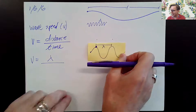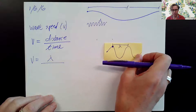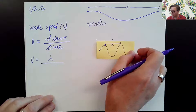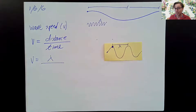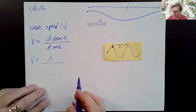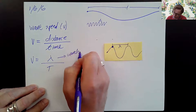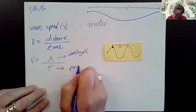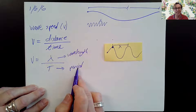How long does that take? The time it takes for a wave to travel one wavelength is called the period. So this is wavelength, measured in meters, and this is period, measured in seconds.